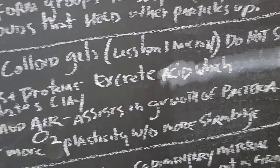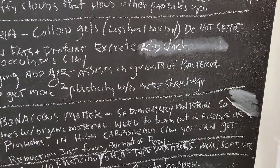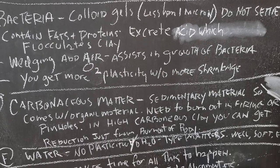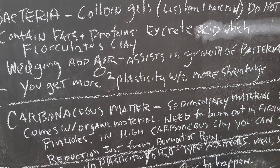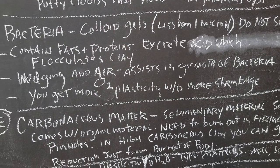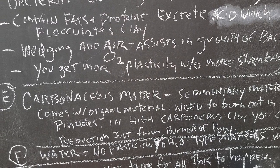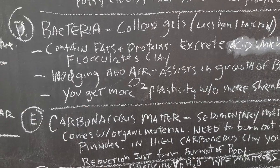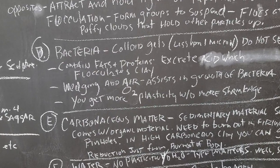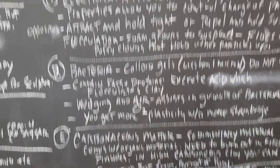The next thing that accounts for plasticity is carbonaceous matter. Clay is a sedimentary material, so it comes with organic matter that needs to burn out during firing so you don't get pinholes. If you have a lot of carbonaceous matter in your clay body — like a fire clay with a lot of carbon and sulfur — you can actually get reduction during the bisque firing because so much needs to burn out. That's why you need air all around your pieces in a bisque kiln and why you need to go slowly during certain periods.